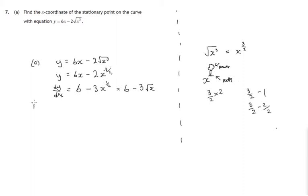For stationary points, we're going to set the gradient equal to 0. So we'll get stationary points by solving this equation. There's the gradient equal to 0. Let's add 3 times root x to both sides.